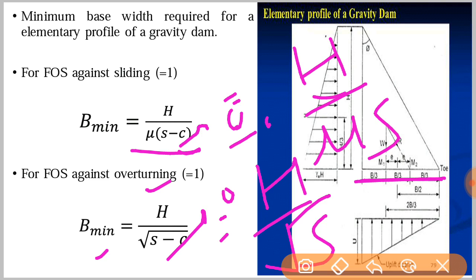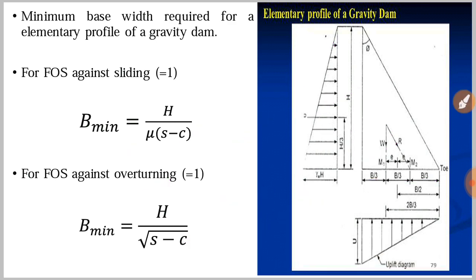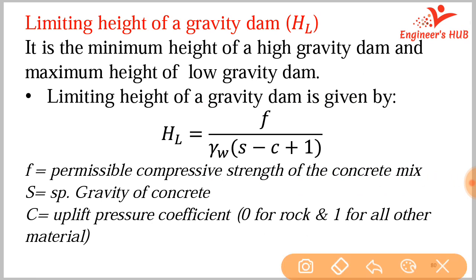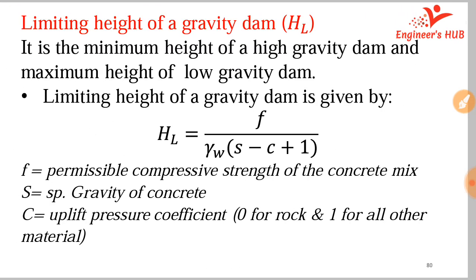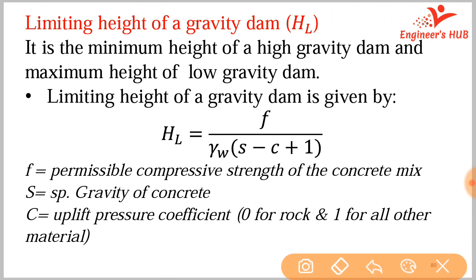Besides these, all other forces that act on a normal gravity dam also act on the elementary profile gravity dam, and the same analysis applies. Next, the limiting height of a gravity dam — this is defined as the minimum height of a high gravity dam and the maximum height of a low gravity dam. Based on the limiting height, we decide whether a given gravity dam is a high dam or a low dam.